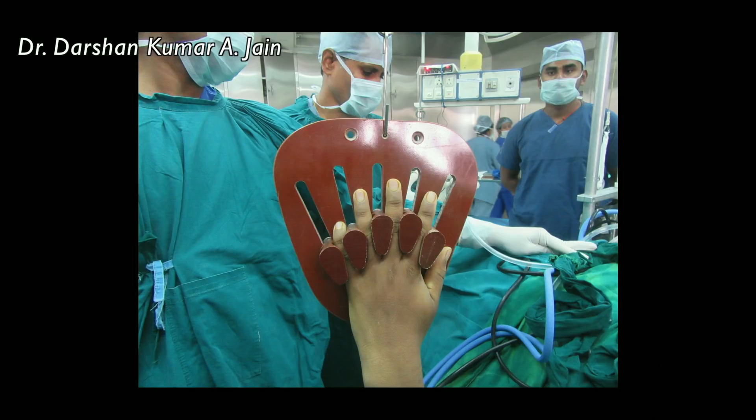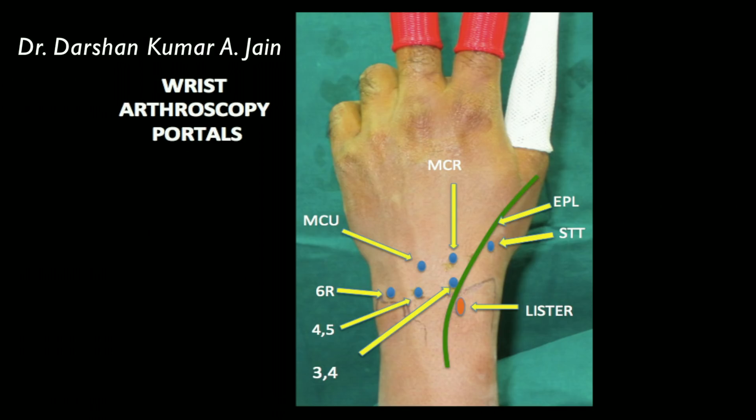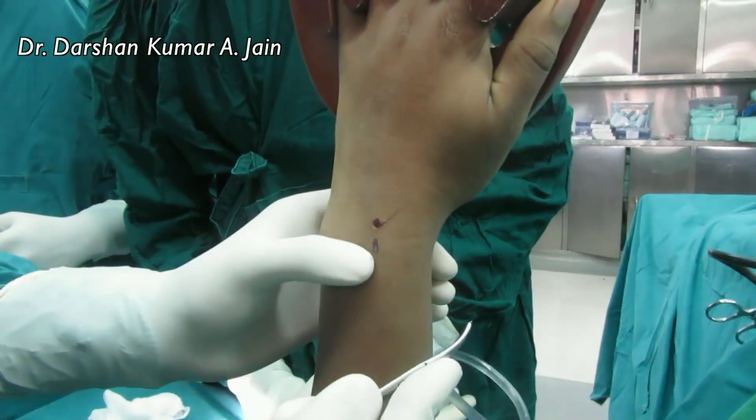These are the various commonly used portals, with reference to the extensor compartment. The 3-4, 4-5, and 6-R portals are the radiocarpal portals. The MCR and MCU are the midcarpal portals.